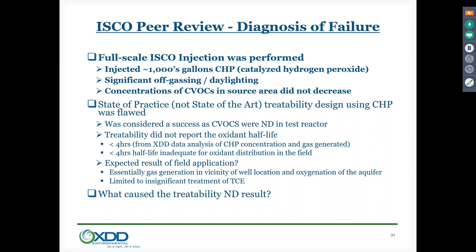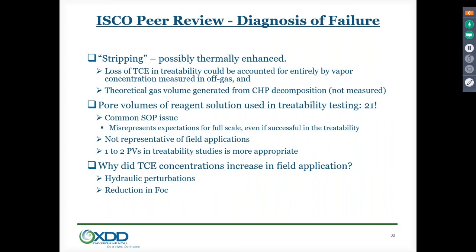The second red flag was the half-life. When introducing peroxide into the environment, you need a half-life of about 15 hours minimum to distribute it from injection wells to where you want it before it produces oxygen gas and radical species. What wasn't determined from this lab was that the half-life was less than four hours — so the peroxide was going to dissociate very rapidly near the injection point and not move as an oxidant into the formation. Additionally, in the reactor, 21 pore volumes of solution were added to the soil — conditions that don't translate to the field.